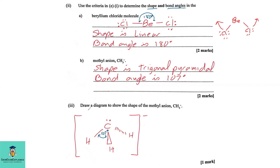For the methyl anion (CH3⁻), the shape is trigonal pyramidal with a bond angle of 107°. Carbon obeys the octet rule — with the lone pair, there are eight electrons total, and the charge is −1. There are three bonds making it trigonal, arranged as a pyramid. The lone pair repels the three bonding pairs closer together, giving a bond angle of 107° to achieve minimum repulsion.